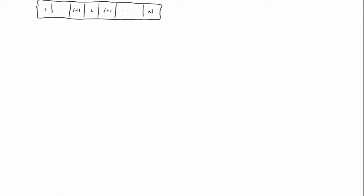So if we have a one-dimensional reservoir that we break up into blocks — block one through block N — and in between we have blocks I-1, I, and I+1, then each individual grid block has its own permeability. Remember, all the material properties for a grid block live at its center. So at the center of the I-1 block we have K_{i-1}, at the center of the I-th block we have K_i, and at the center of the I+1 block we have K_{i+1}.